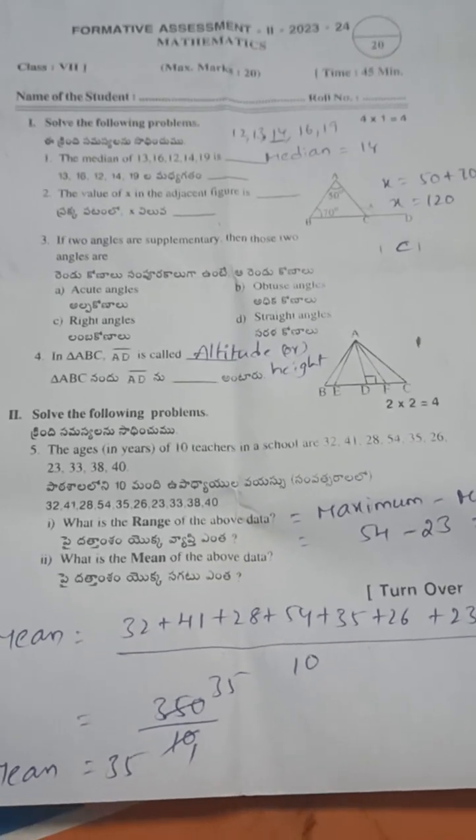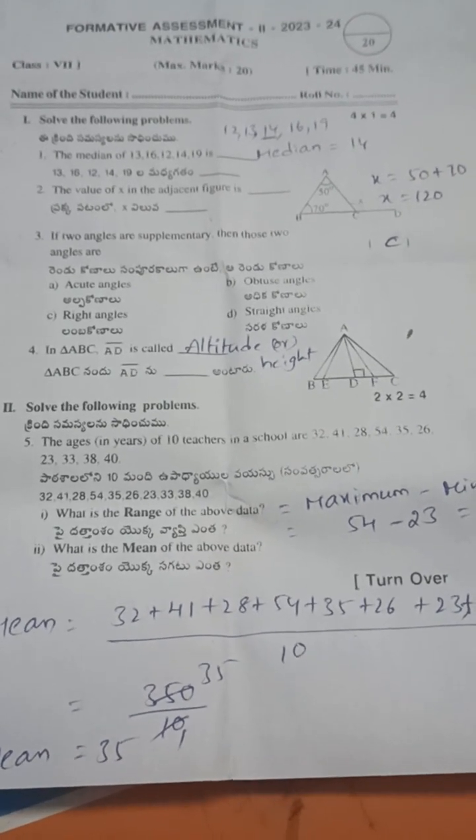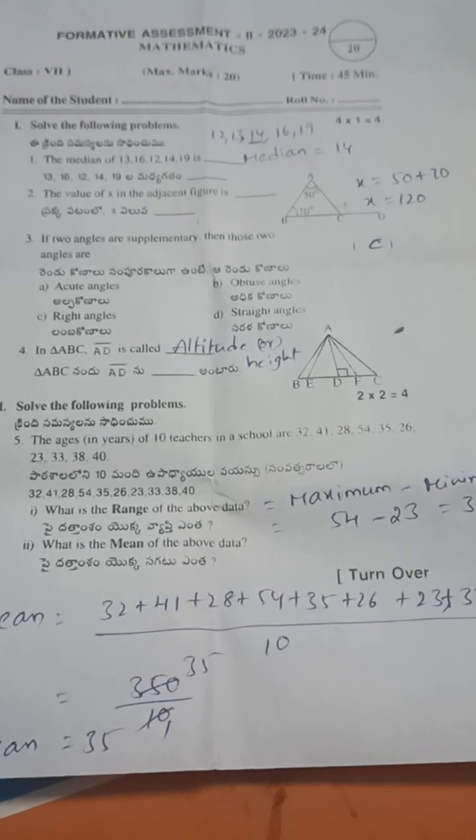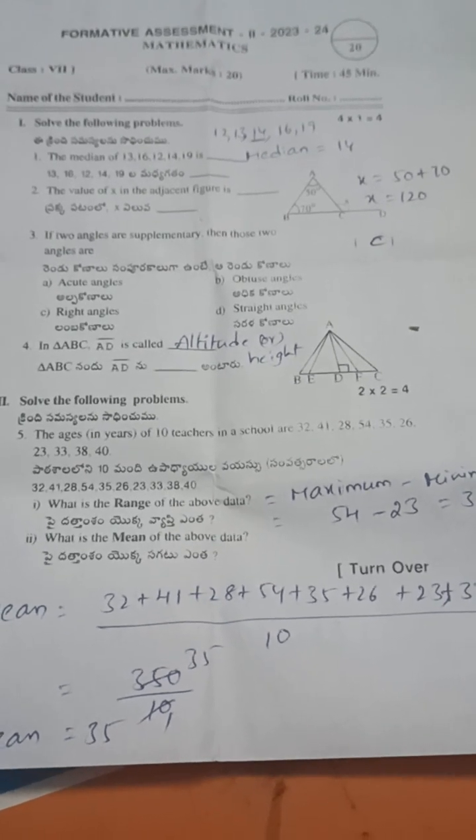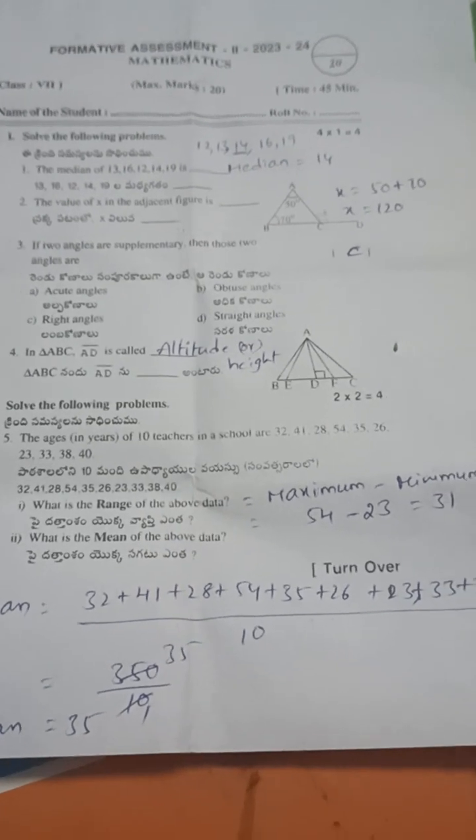Next, fifth one. The given ages of 10 teachers in a school: 32, 41, 28, 54, 35, 26, 23, 33, 38, 40. What is the range of the data? Range means maximum minus minimum.